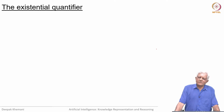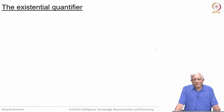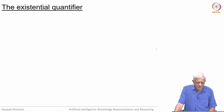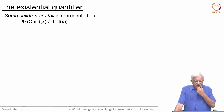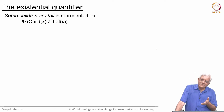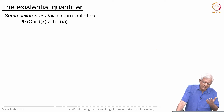We have been looking at how we can use quantifiers and logical connectives to represent knowledge about the world, about our domain. Let us look at the existential quantifier. If you want to say that some children are tall, we should represent this as: there exists an x such that x is a child and x is tall. This is in contrast to saying all children are tall, where we say for all x, child(x) implies tall(x). In one case we use implication, in one case we use AND. We use implication for the universal case and AND for the existential case.